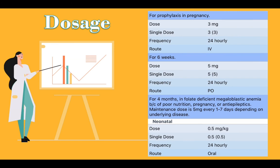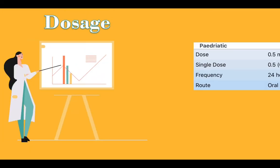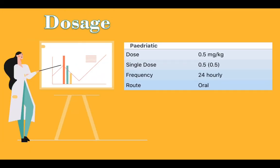Neonatal dose: 0.5 mg per kg. Single dose: 0.5. Frequency: 24 hourly. Route: oral. Paediatric dose: 0.5 mg per kg. Single dose: 0.5. Frequency: 24 hourly. Route: oral.